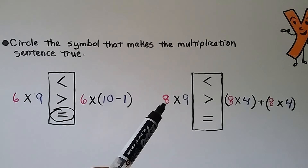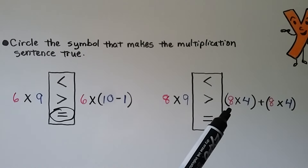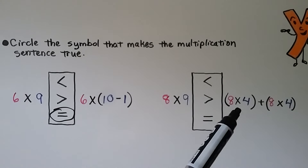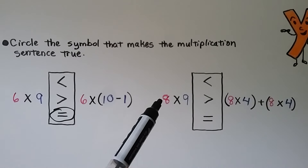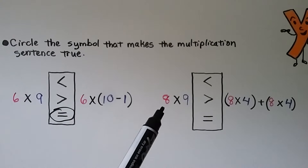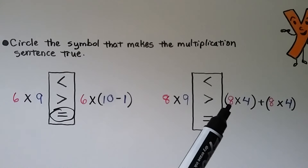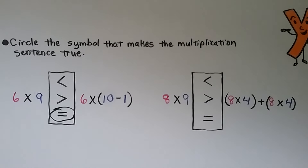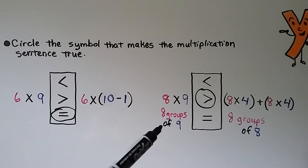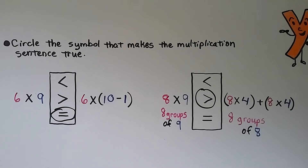Next: is 8 times 9 less than, greater than, or equal to 8 times 4 plus 8 times 4? It looks like they broke apart 9 as 4 plus 4, but 4 plus 4 is 8, not 9. So we're comparing 8 times 9 to 8 times 8. Since 8 groups of 9 is greater than 8 groups of 8, 8 times 9 is greater than 8 times 4 plus 8 times 4.